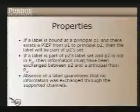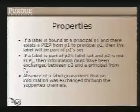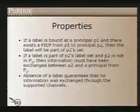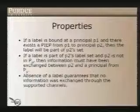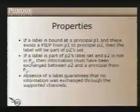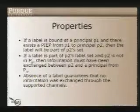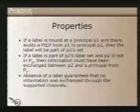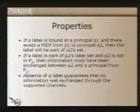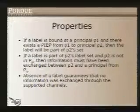then information must have been exchanged between p2 and the principle that could have generated the label. As a consequence, we can see the absence of a label as a guarantee that no information was exchanged between a principle that could have generated a label, through the channels supported in the actual implementation and not considered in covert channels.